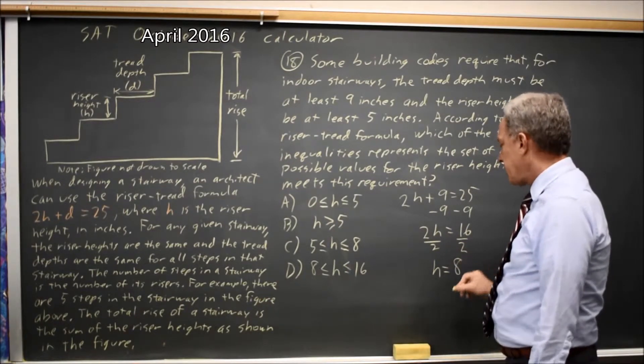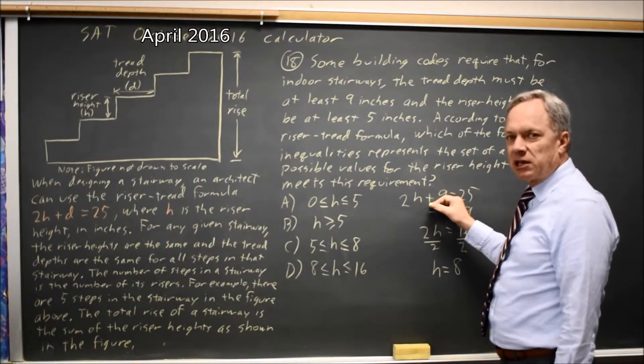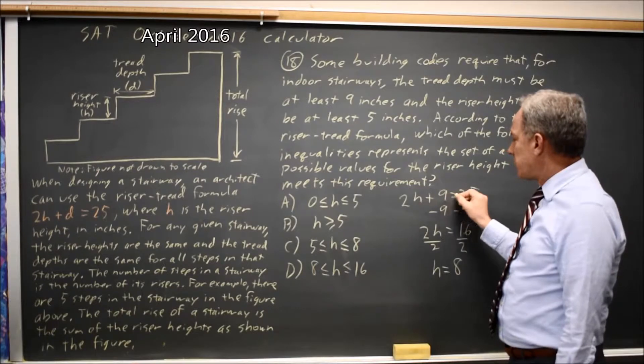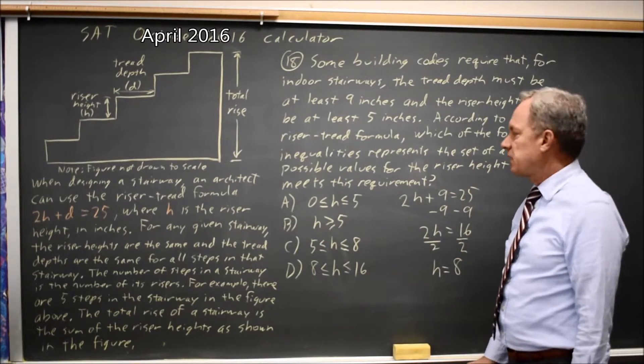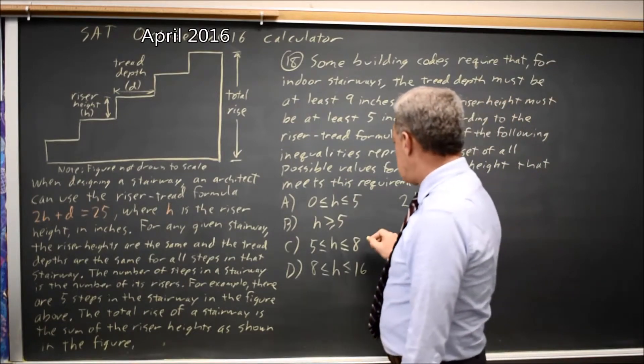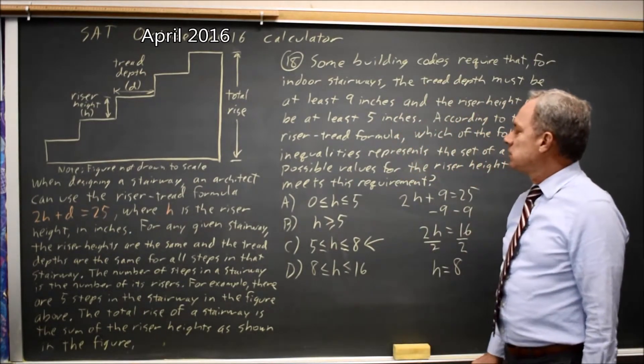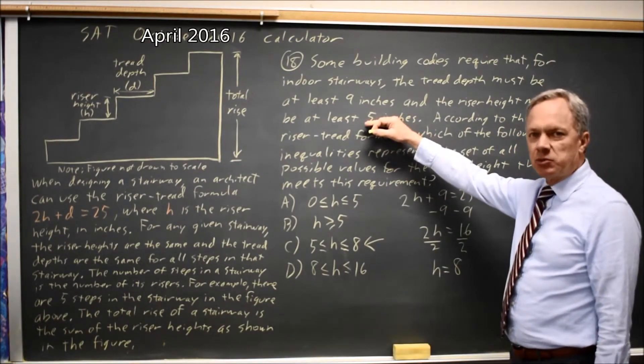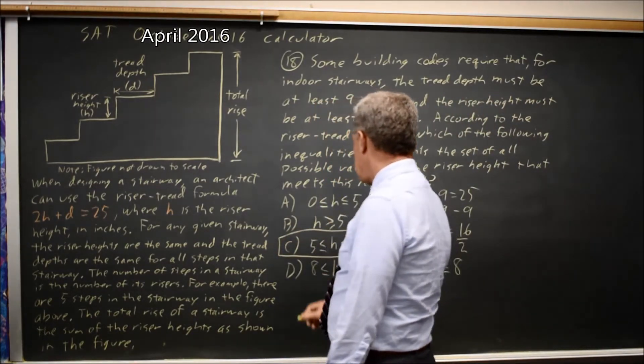So at D equals 9, H would be 8. And if D is greater than 9, we'll subtract more than 9 from 25, and H will be less than 8. So an upper bound of 8, as in choice C, matches that. And we're told riser height H must be at least 5, which also matches choice C. The correct answer would be C.